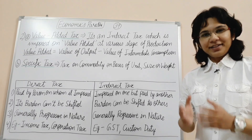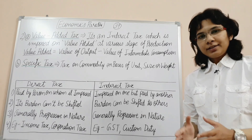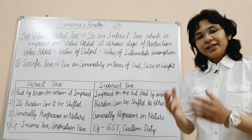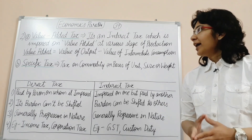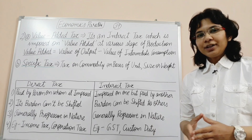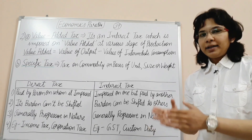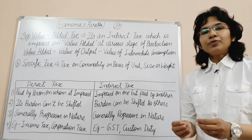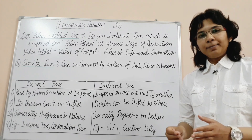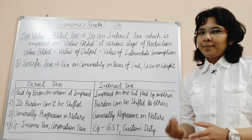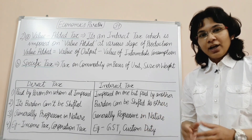What is value-added tax? It is an indirect tax which is imposed on the value added at various stages of production. Value added is the value of output minus intermediate consumption. For example, if you sell output worth 800 rupees and your intermediate inputs cost 600 rupees, then the value added is 200 rupees, and the tax is applied on that 200 rupees. This applies at every stage of production.